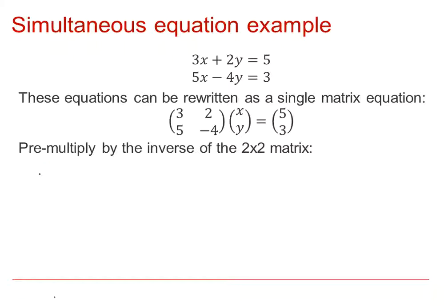In this example, M is the matrix (3, 2, 5, −4) — those are the coefficients of X and Y. We can quickly find the inverse of M: it is −1/22 times the adjusted matrix. We swap the leading diagonal elements and change the sign of the non-leading diagonal elements to find the inverse of M.